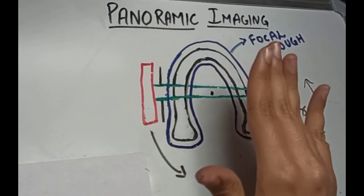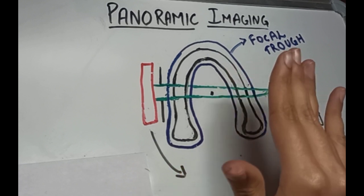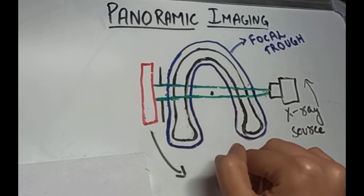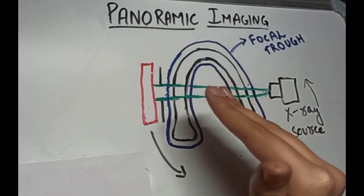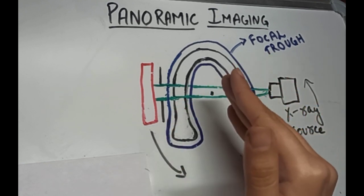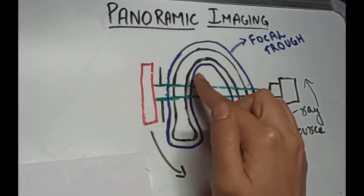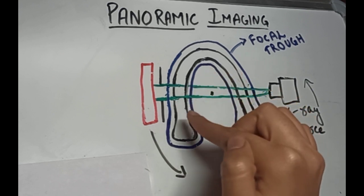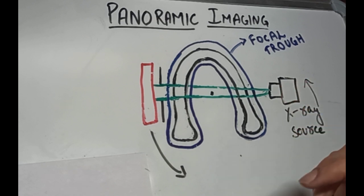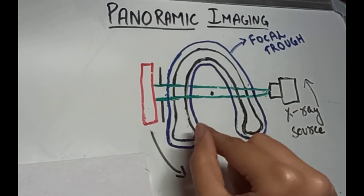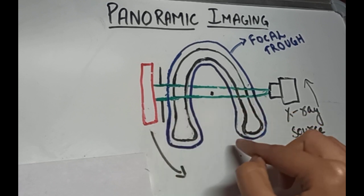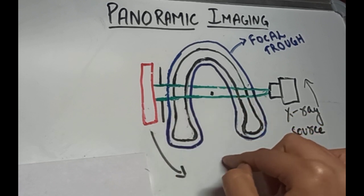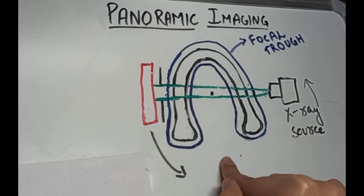The focal trough is a three-dimensional curved zone or image layer where structures lying within the zone are reasonably well defined on the image. The closer an anatomical structure is positioned to the center of the trough, the more clearly its image is seen on the radiograph. Objects within the focal trough form sharp and clear images, whereas objects outside the focal trough are blurred, magnified, reduced in size, or even distorted to the extent of not being recognizable.